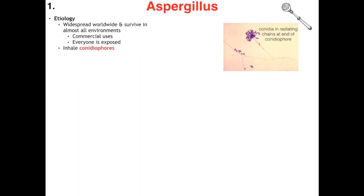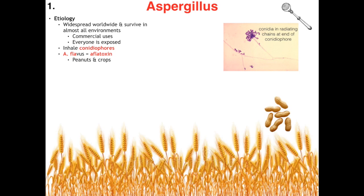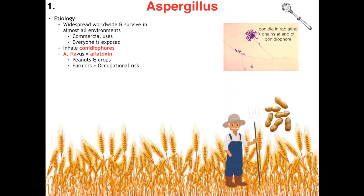He loves to live in our pillows. His route of entry is through inhalation of the conidiophores, and there are two species we need to be aware of. The first is A. flavus, which is associated with aflatoxin — they share the same first four letters. It's heavily associated with peanuts and crops, giving farmers an occupational hazard. The second species is Aspergillus fumigatus and its toxin is gliotoxin, which share a G in their name, unlike A. flavus and aflatoxin.